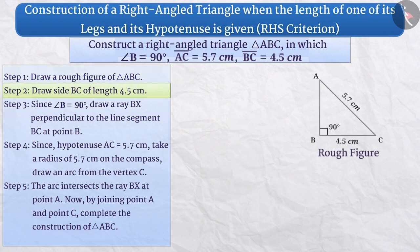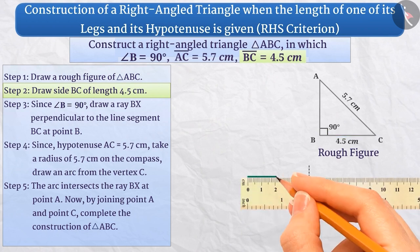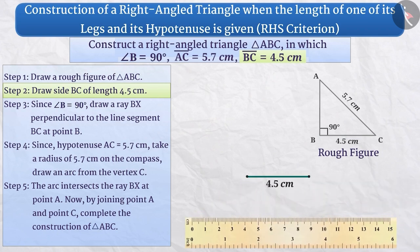Step 2. Here, the length of the side BC is 4.5 cm. Therefore, we will draw a line segment of length 4.5 cm with the help of a ruler. We will name this line segment BC. This line segment is the side BC of triangle ABC.